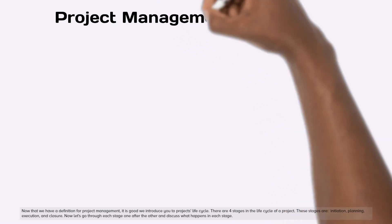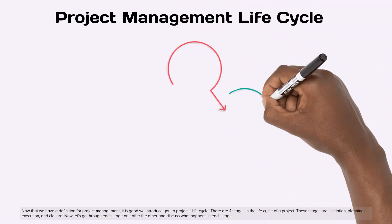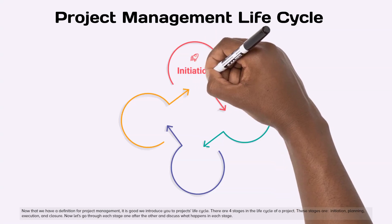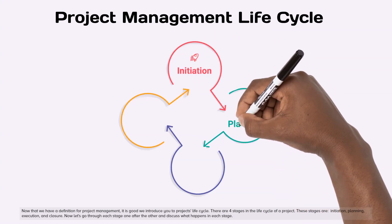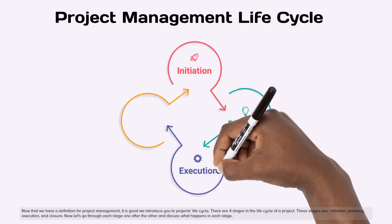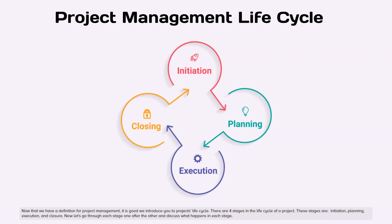Now that we have a definition for project management, it is good we introduce you to the project life cycle. There are four stages in the life cycle of a project. These stages are initiation, planning, execution, and closure. Now let's go through each stage one after the other and discuss what happens in each stage.